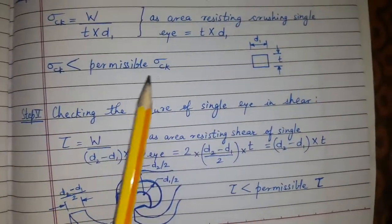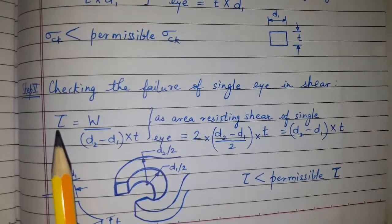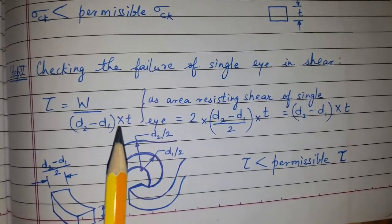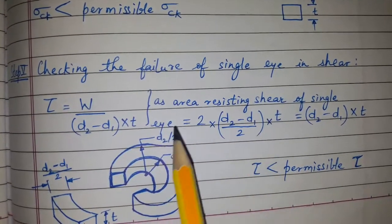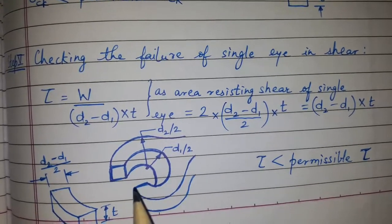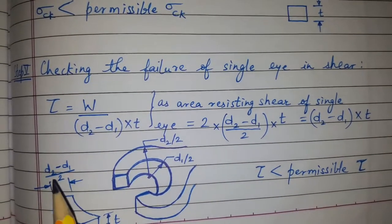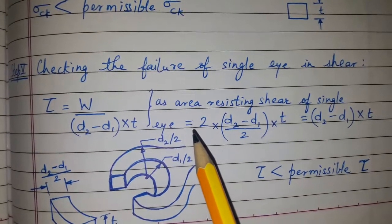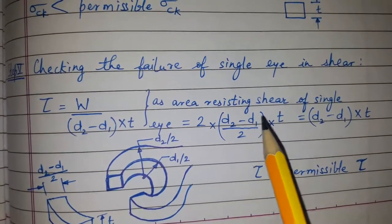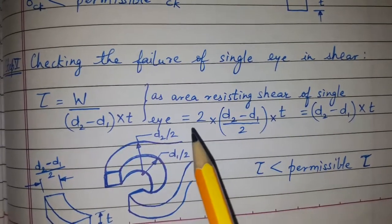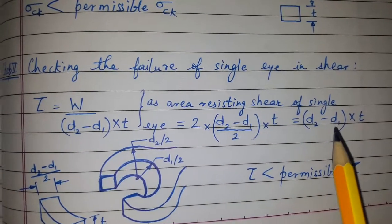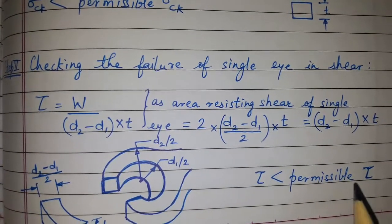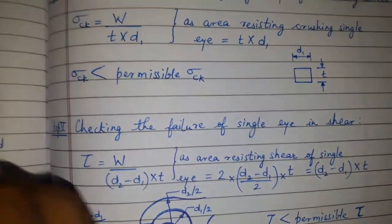Step 5: we have to check the failure of single eye in shear. Shearing stress is equal to load upon the resisting area. The resisting area which will resist the shear in this case is these two areas: (d2 − d1)/2 × t on each side, giving 2 × (d2 − d1)/2 × t, which simplifies to (d2 − d1) × t. We calculate the shearing stress and check whether it is less than the permissible shearing stress.